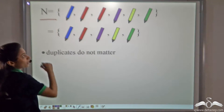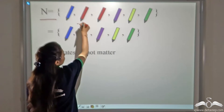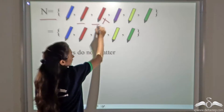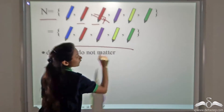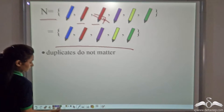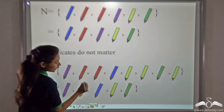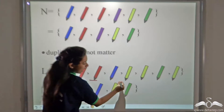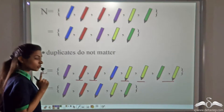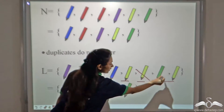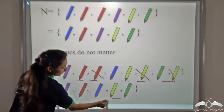Similarly, in a set, duplicates do not have any meaning — duplicates do not matter. So whenever we write a set, we will remove the duplicates and then write the answer. For example, if we have a set of pens with a duplicate red pen, we will remove the duplicate and write the set without it. Similarly, set L of pens has duplicates — red has a duplicate and yellow has two duplicates — so we always remember to remove the duplicates.